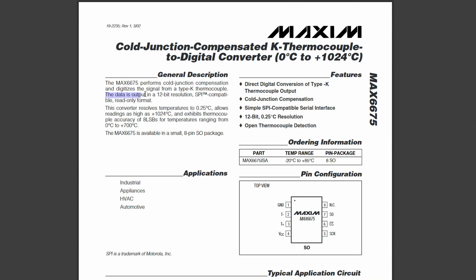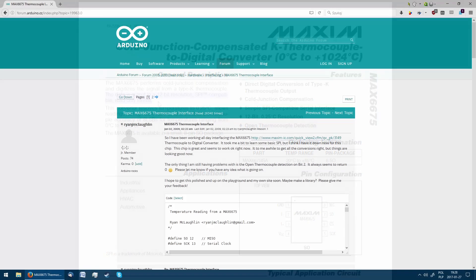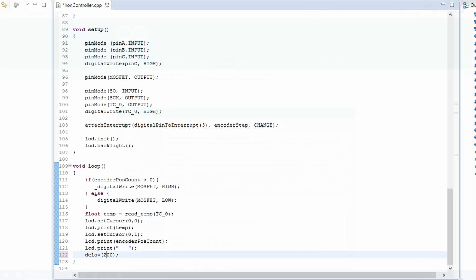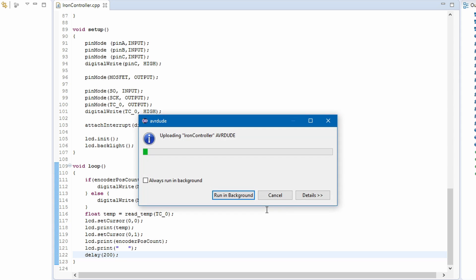With the encoder mostly finished, we'll now handle the thermocouple. It uses a non-standard implementation of the SPI protocol. I'll be using a slightly modified version of the code from this thread on the Arduino forums. It is important to add a 200 millisecond delay between reading the thermocouple, as otherwise it doesn't update the temperature.